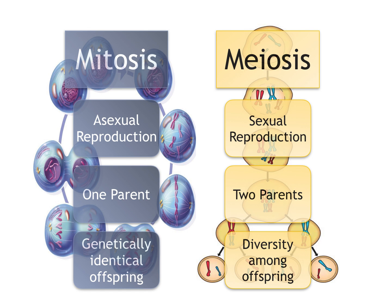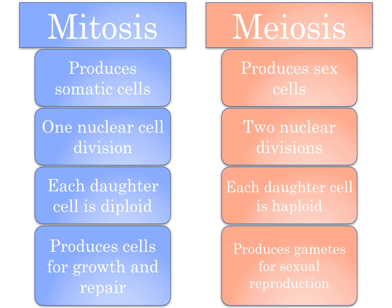Here's a side-by-side comparison of mitosis and meiosis. Mitosis: asexual reproduction by one parent, produces genetically identical offspring. Meiosis: sexual reproduction from two parents, which means diversity among offspring. Another comparison: mitosis occurs in somatic cells with one nuclear division; each daughter cell is diploid (2n), producing cells for growth and repair. Meiosis produces sex cells with two nuclear divisions; each daughter cell is haploid with half the adult chromosome number, producing gametes — the sperm and egg — for sexual reproduction.